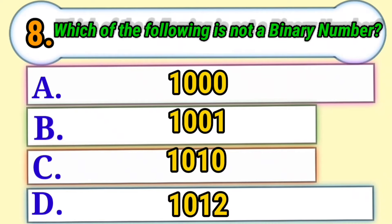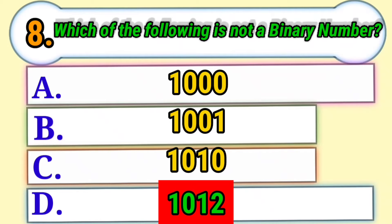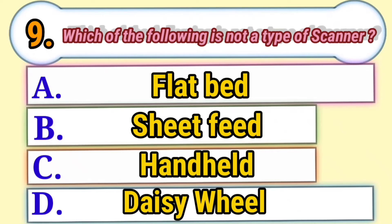Which of the following is not a binary number? Answer: 1012. Which of the following is not a type of scanner?